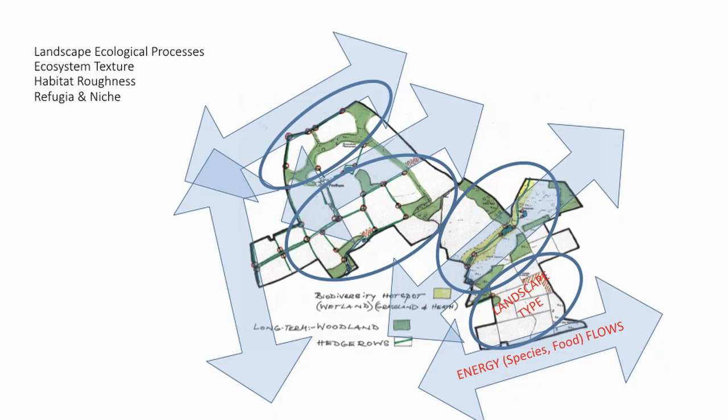Looking at landscape processes and how we plug our restoration and creation into existing landscape processes: we've got the Berwickshire coast within a mile and a half of the eastern edge of the farm, and the very strong catchment management of the Tweed and the Whitteda within two or three miles west of us. So we've got two very big, strong, functioning landscapes which actually influence species flow across our farm and the neighbouring farms.